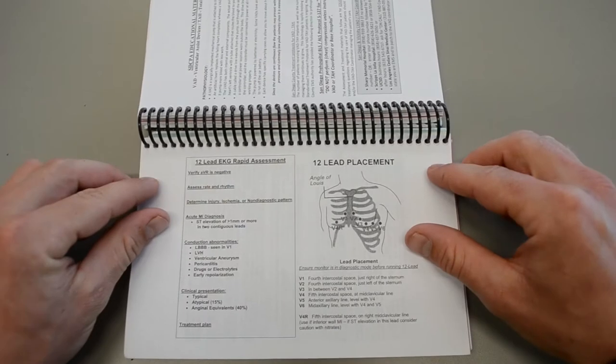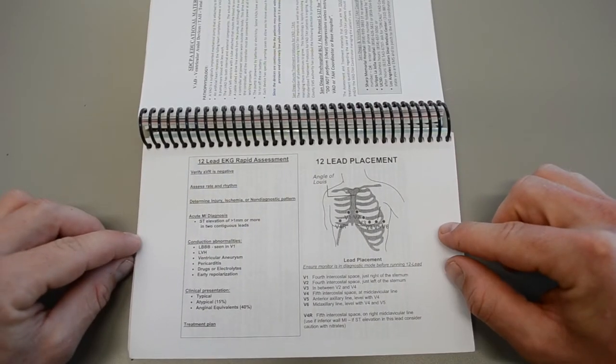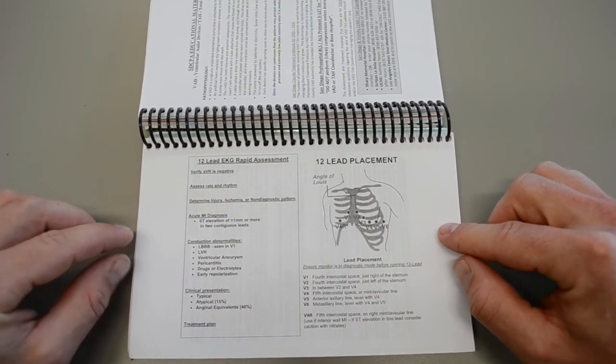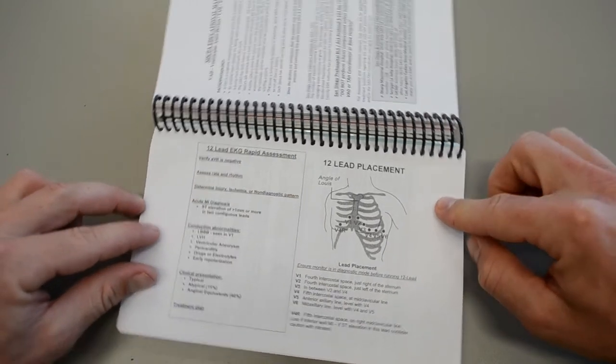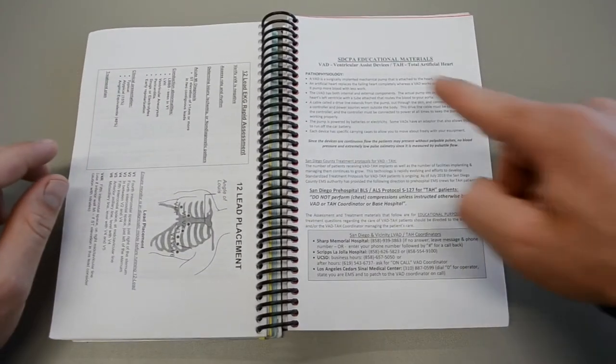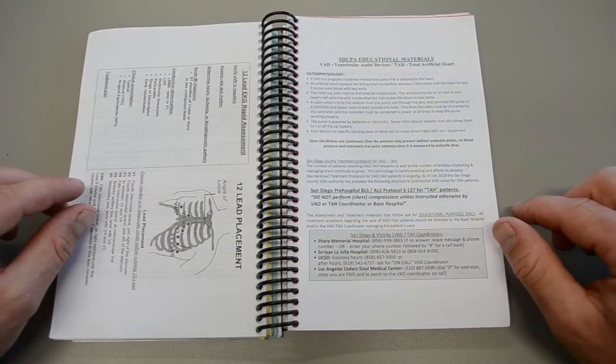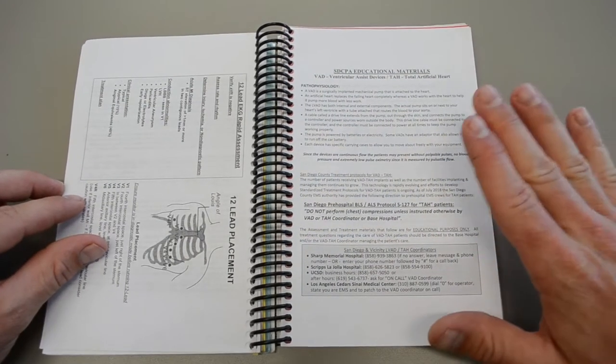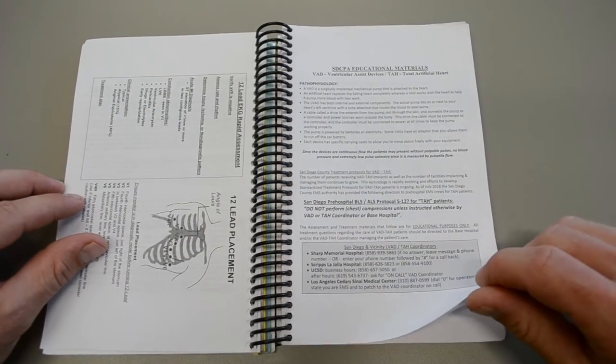This however, you will be asked as a BLS level EMT sometimes to place a 12 lead. Get familiar with the 12 lead placement. Ventricular assist devices and total artificial heart. I have been asked questions about these devices in interviews.